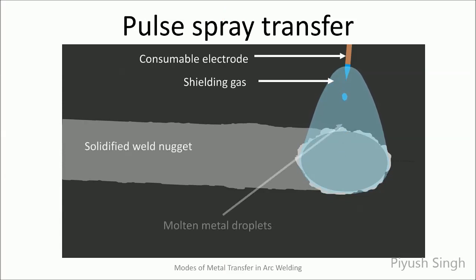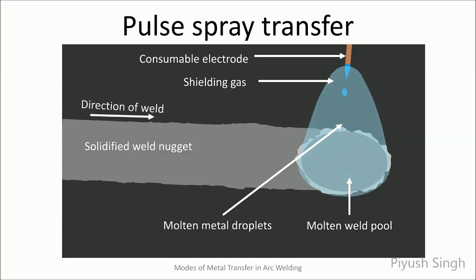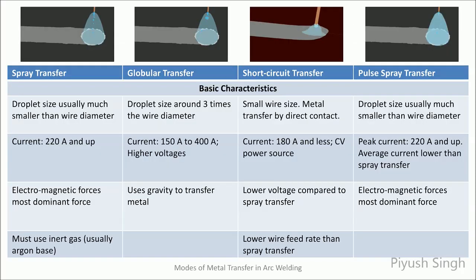Here is an animation of pulse mode of metal transfer. When the current level is low, that is during the background time, the arc diminishes, but as peak current is reached, the arc intensifies and a droplet is released into the arc. Here is a comparison of the basic characteristics of the different modes of transfer discussed. The spray transfer mode occurs at the highest current level while short circuit transfer occurs at the lowest current levels. Globular transfer occurs at an intermediate current range. Though the peak current is high in pulse transfer, the average current is quite low. The most dominant force in spray and pulse spray mode of transfer is the electromagnetic force, which pinches off the tiny droplets from the electrode.